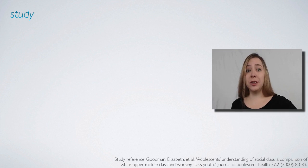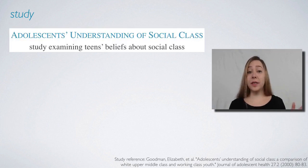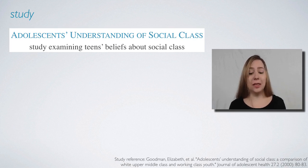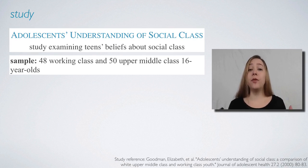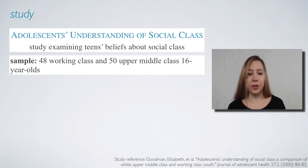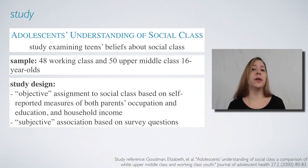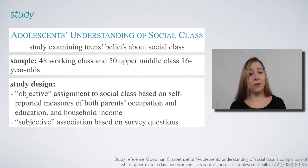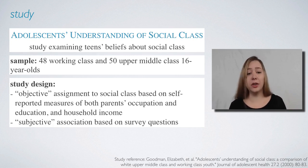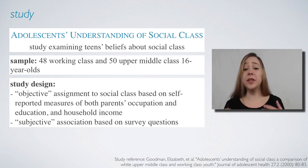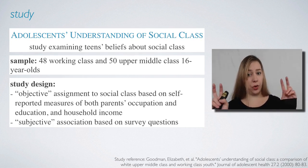Let's first introduce the dataset that we'll be working on. The study titled 'Adolescent's Understanding of Social Class' examines teens' beliefs about social class. The sample consists of 48 working class and 50 upper middle class 16-year-olds. Students were first categorized into their social class objectively based on self-reported measures of parents' occupation, education, and household income. This is the social class that we take to be the truth.